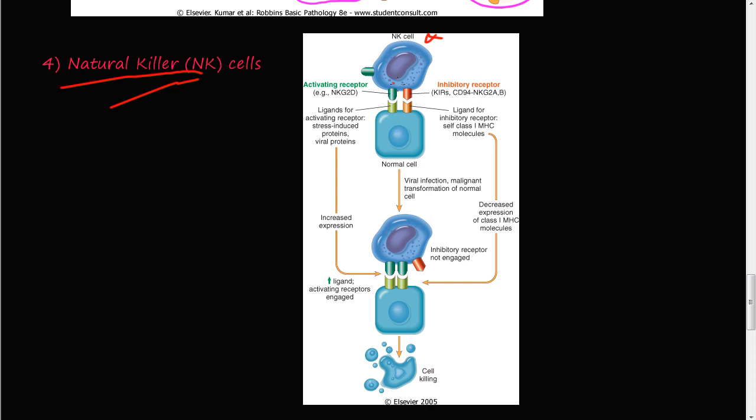What happens is that the natural killer cells will go around and they will just kill anything that they come in contact with. However, under normal physiological conditions you have a normal cell, and the normal cells have these ligands.